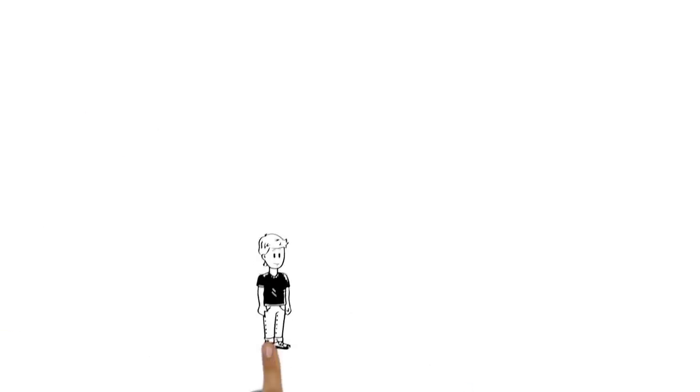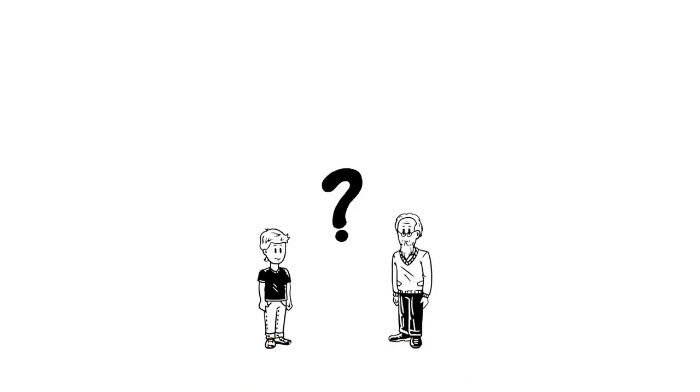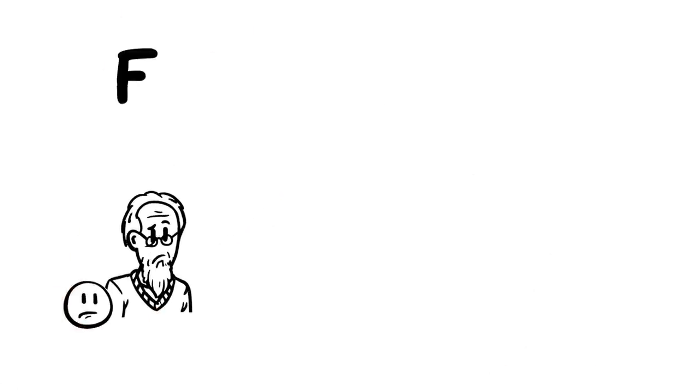So how can Mike check if his grandfather might be having a stroke? By using the FAST test. The F stands for facial weakness. Can the person smile? Has their face fallen on one side?